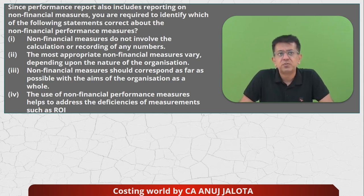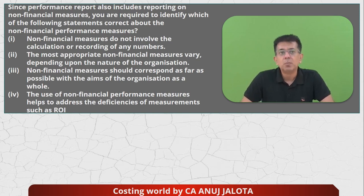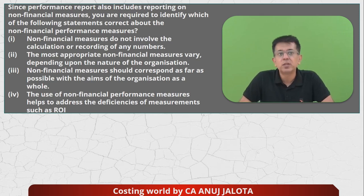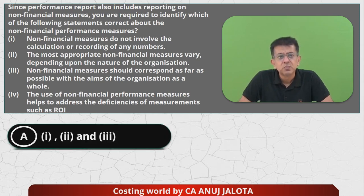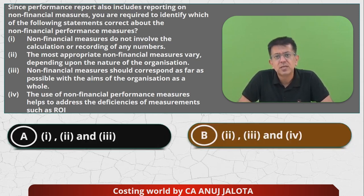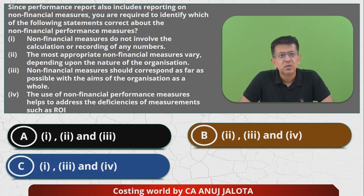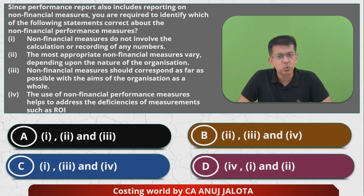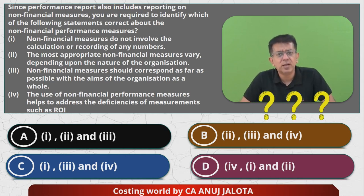Four points to evaluate: First, non-financial indicators do not involve the calculation or recording of any numbers. Second, the most appropriate non-financial measures vary depending upon the needs or nature of the organization. Third, non-financial measures should correspond as far as possible with the aims of the organization. Fourth, the use of non-financial performance indicators helps to address the deficiencies of measurements such as ROI. Options are: (A) 1, 2, 3 correct; (B) 2, 3, 4 correct; (C) 1, 3, 4 correct; (D) 1, 2 correct.